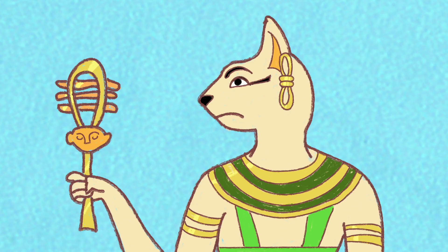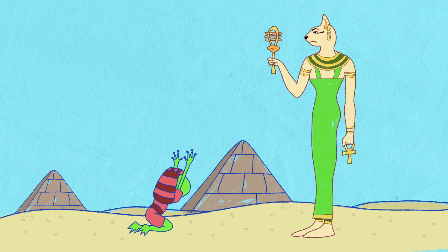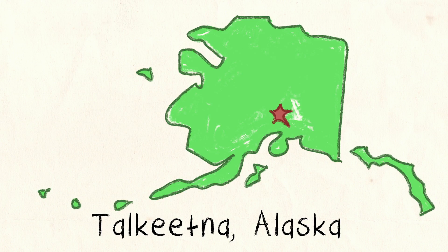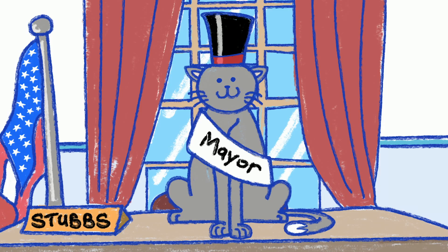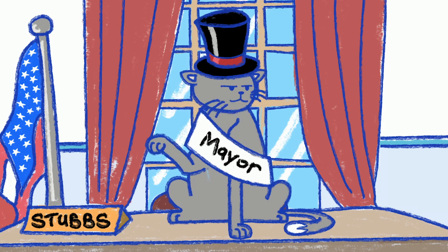In ancient Egypt, cats were worshipped as symbols of protection and joy. We're not worthy. And in Talkeetna, Alaska, the town mayor is, you guessed it, a cat called Stubbs. I mean, your worship.